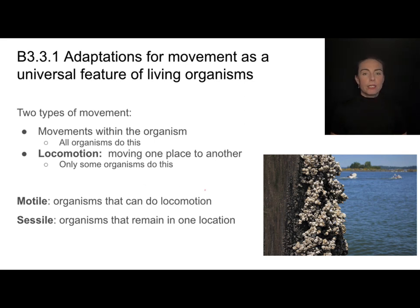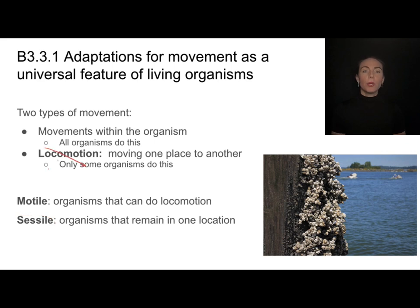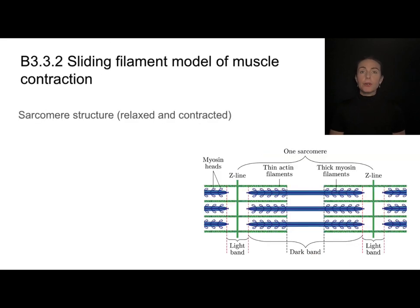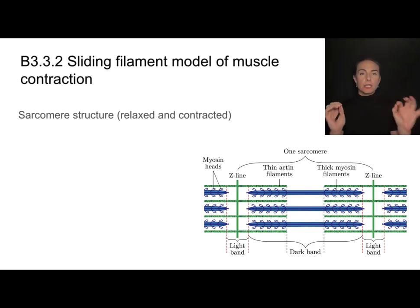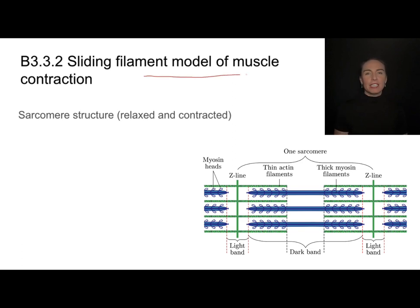Motile organisms can do locomotion — moving from one place to another. Sessile organisms remain in one location, so no locomotion, but they still have movement from within. When you look at a muscle under a microscope, you're going to notice that it has stripes, and those stripes give it its name: striated muscle fibers. Those stripes are caused by repeating units called sarcomeres.